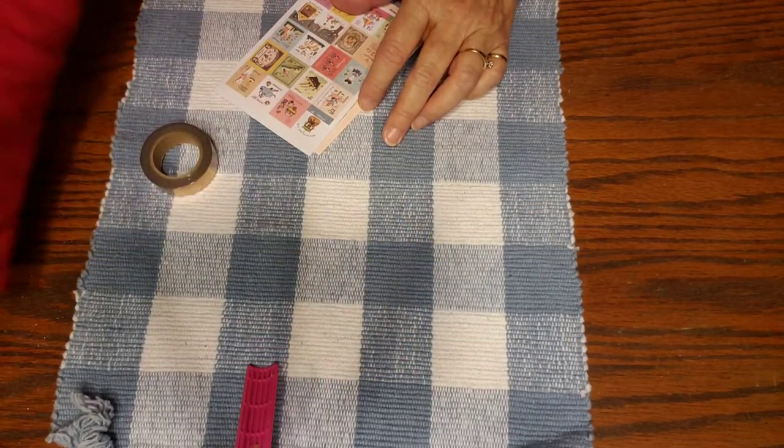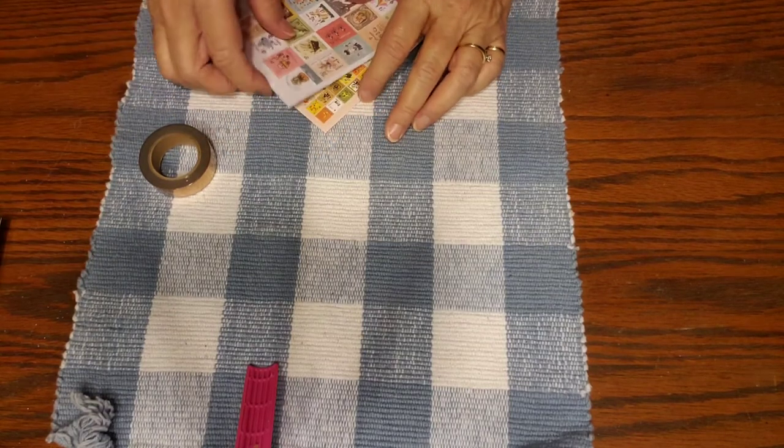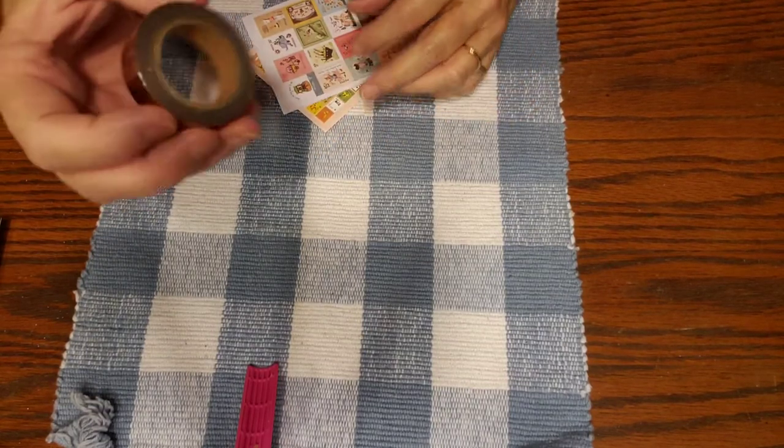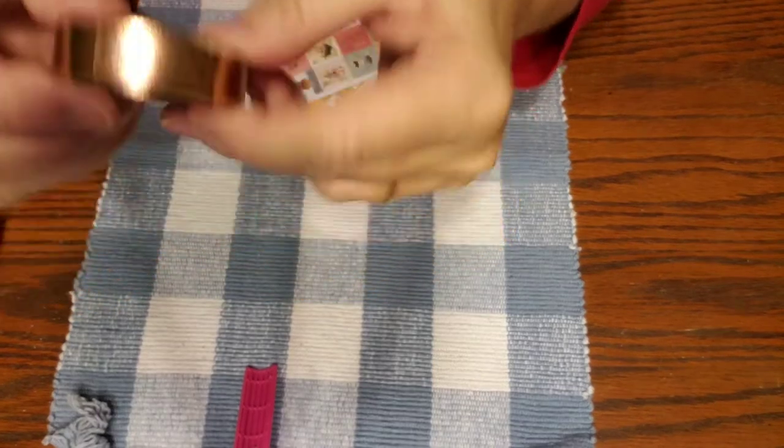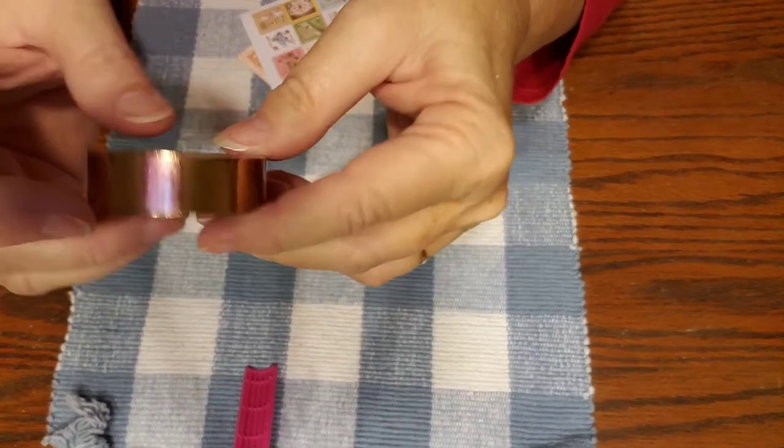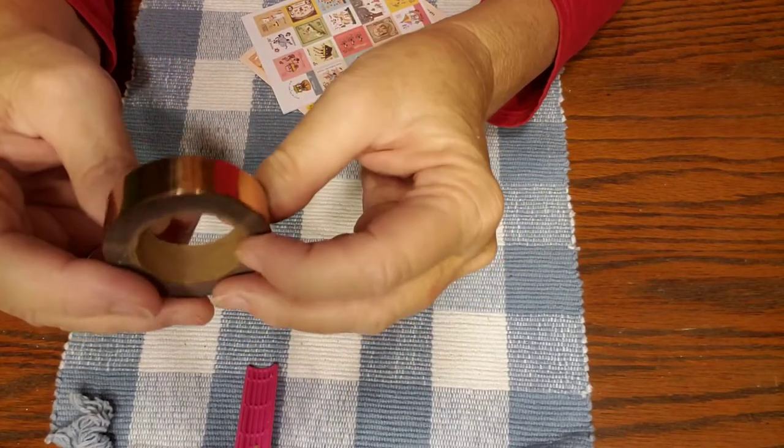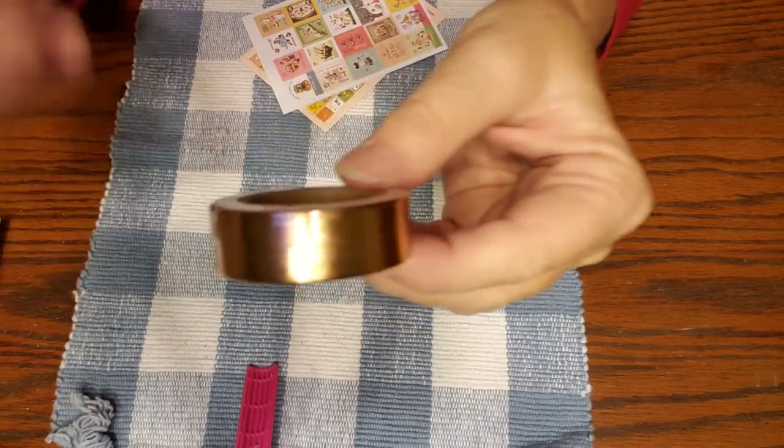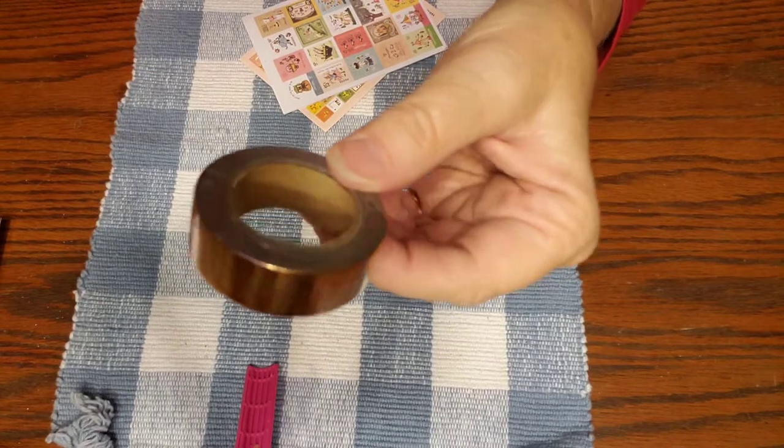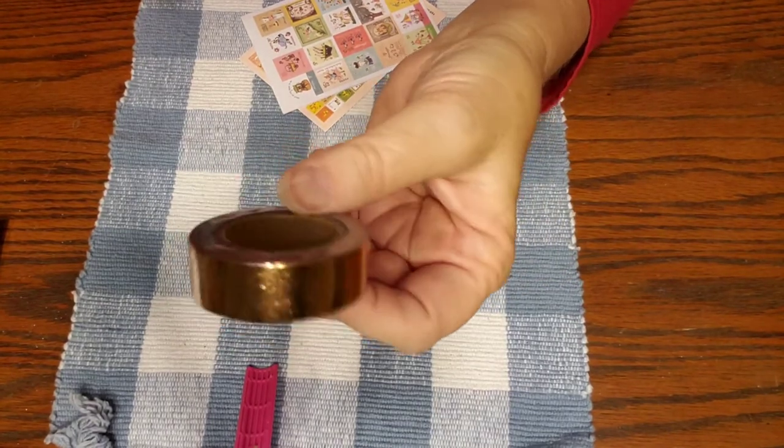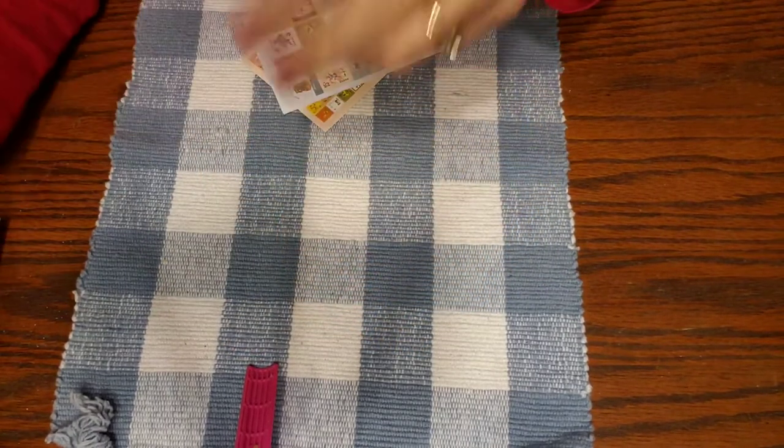This is the washi. It's copper colored and Studio Calico does have very high quality washi. It sticks good. And this is going to be really pretty on a layout or holding something together or whatever you use washi for.